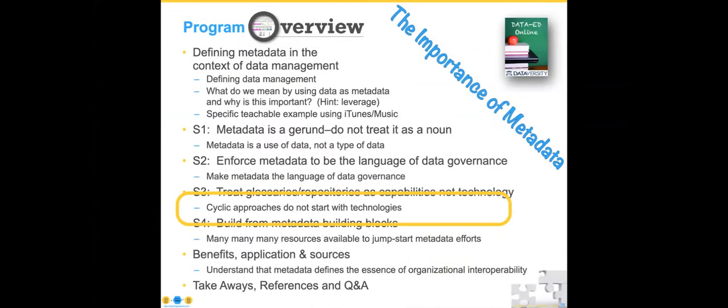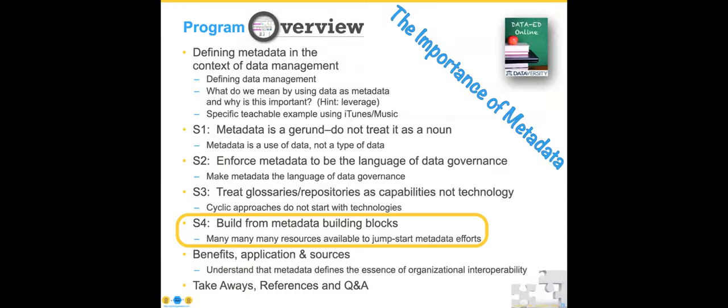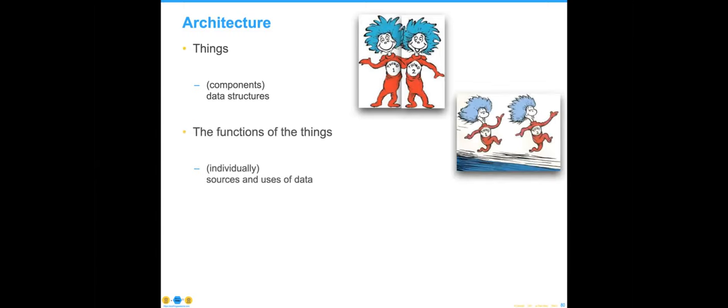Now we'll move to our fourth strategy: do not start from scratch. We have so many things built up as a community over the years, and vendors are tremendously helpful. If you start from a blank sheet of paper, you'll spend a lot more time unnecessarily. Let's talk about architecture briefly. Architecture is about describing things at a very high level of abstraction — things, or perhaps if you're looking at a house, doors and windows. It also talks about the function of those things — it doesn't do a lot of good to have doors that lead nowhere.